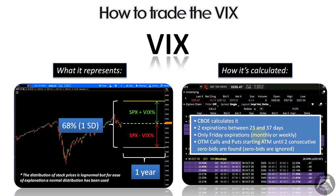This type of trading is something only available with options — stocks don't have volatility you can trade. In this case, not only are you betting on the implied volatility of a certain underlying, you're betting on the implied volatility of the US market, which is VIX — a number widely followed, reported all the time alongside the SPX, NASDAQ, Russell 2000, and Dow Jones. It's a way to trade volatility and a good addition to your portfolio.